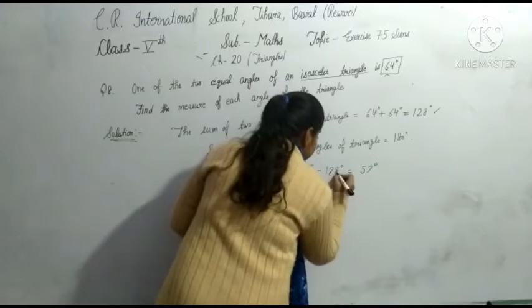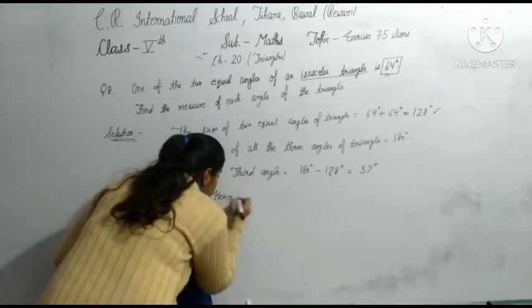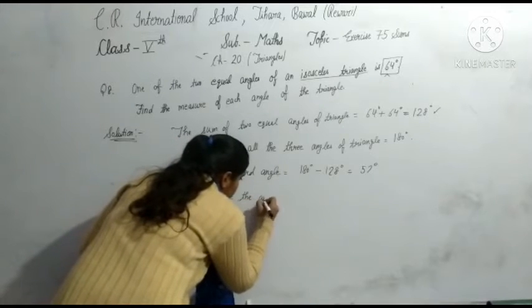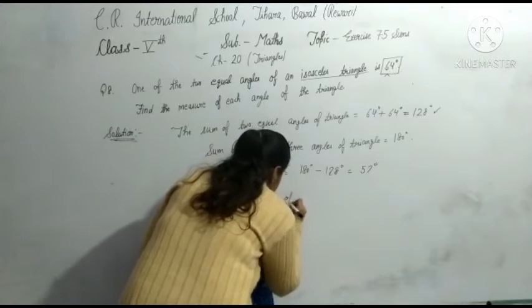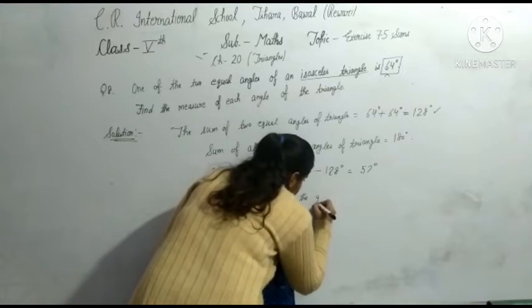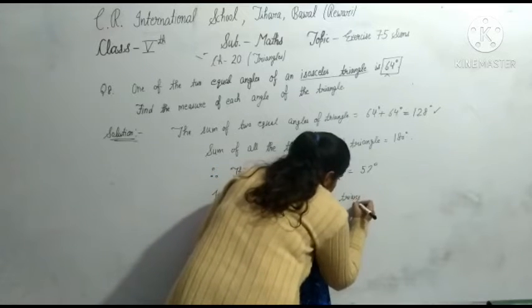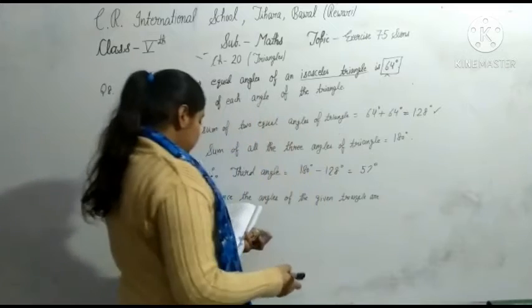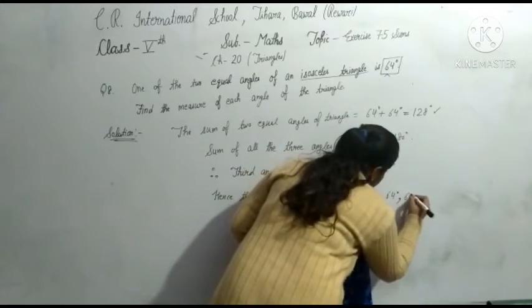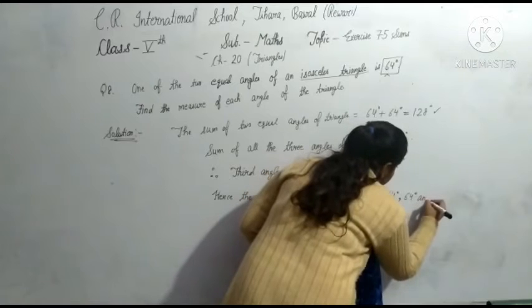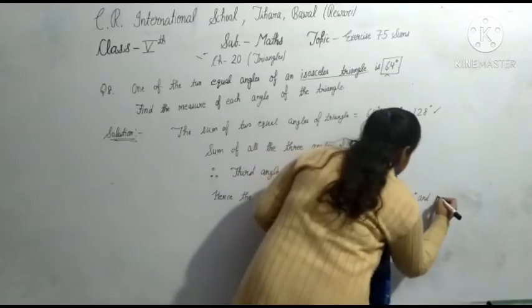Hence the angles of the given triangle are: 64 degrees, 64 degrees, and the third angle is 52 degrees.